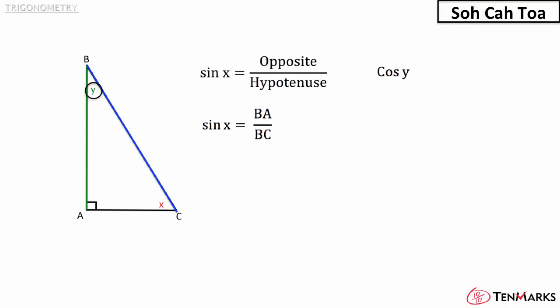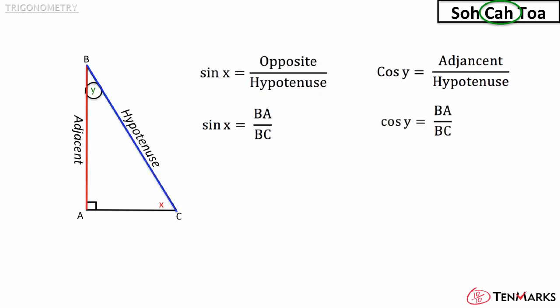What about the cosine of angle y? SOH-CAH-TOA tells you that the cosine is the adjacent over the hypotenuse. In this triangle, the adjacent side is BA and the hypotenuse is BC. So the cosine of the angle is BA over BC.